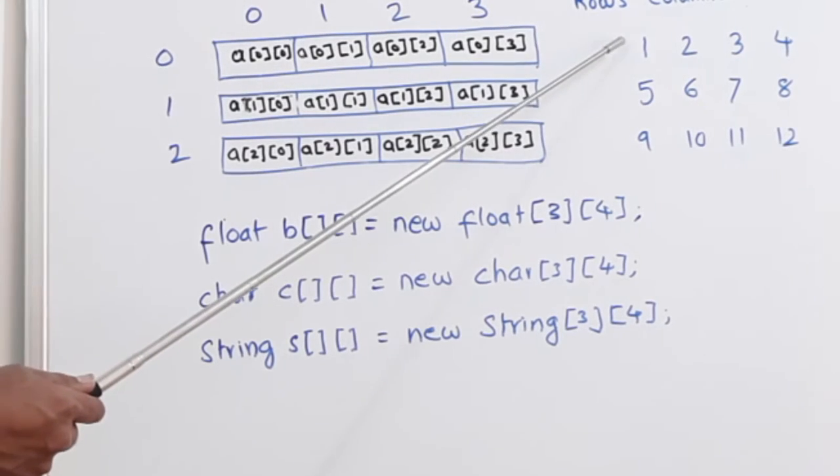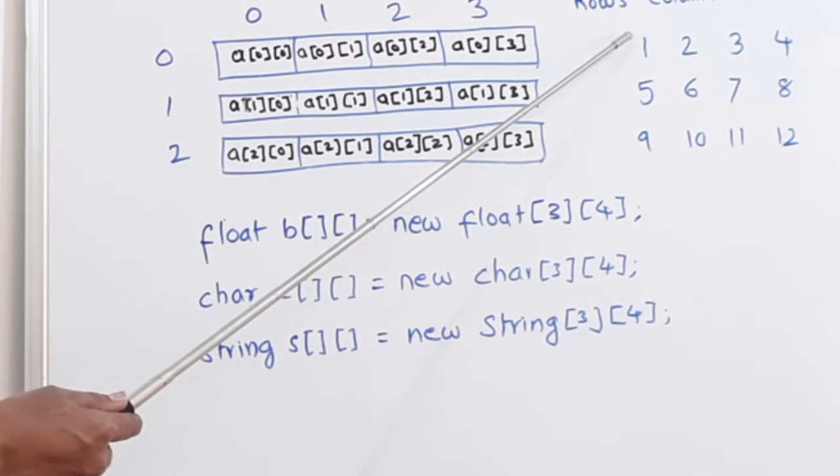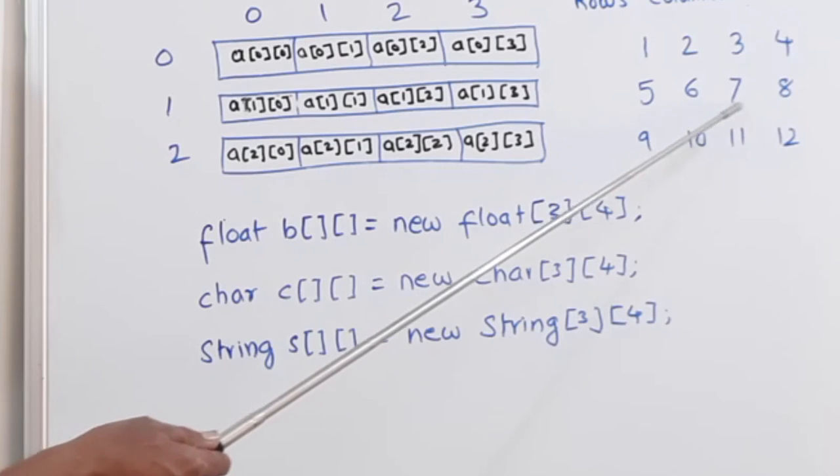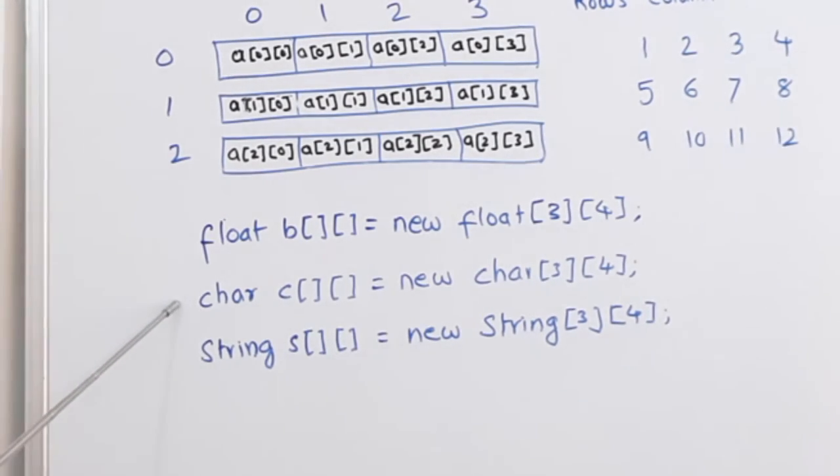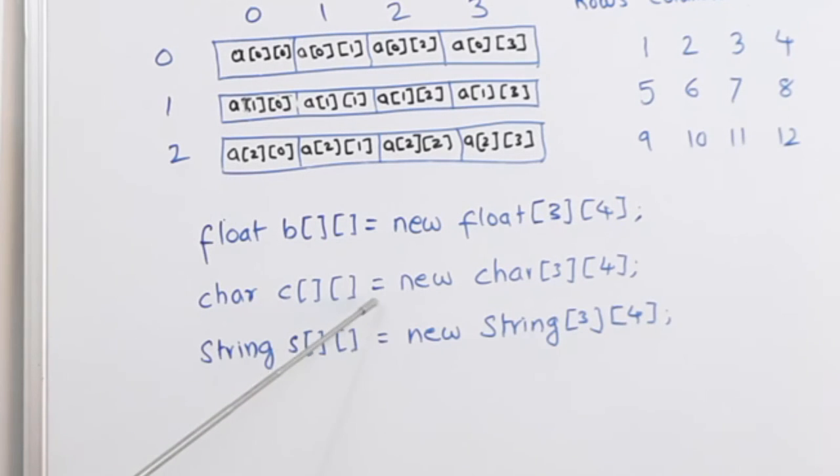Instead of numbers, if you want to write characters here, like a, b, c, d, e, f, g, then we will use a character array: char c[][] = new char[3][4].